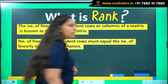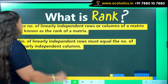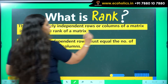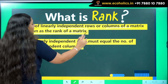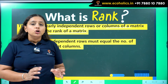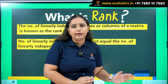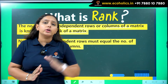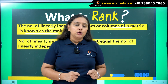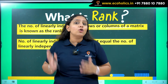Before jumping to how to find rank, let's talk about what rank is. The number of linearly independent rows or columns of a matrix is known as the rank of the matrix. When we talk about linear independence, the number of rows or columns which are not functions of another row or column — that number gives the rank of the matrix.